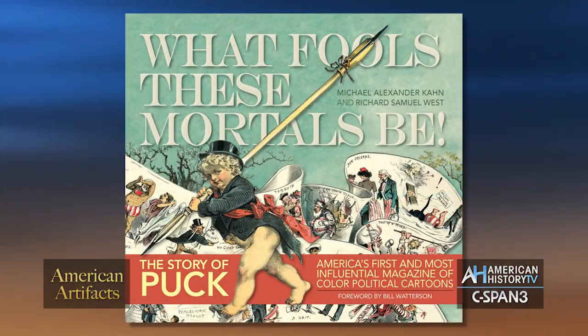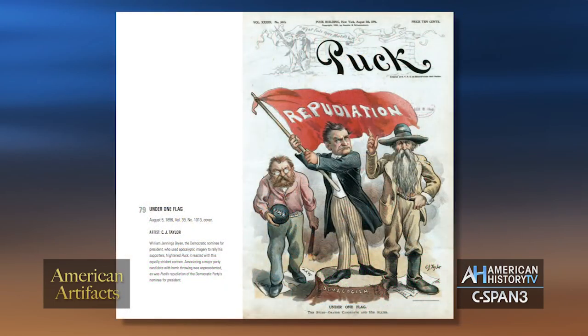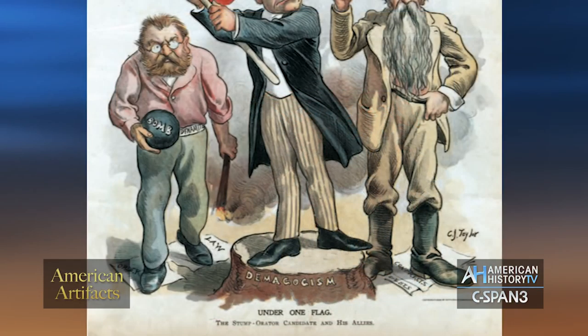You're watching American Artifacts on American History TV, and joining us in our studios is the co-author of the book 'What Fools These Mortals Be,' Michael Alexander Kahn. The book came out back in 2014. This is the first cartoon ever depicting a presidential candidate as a bomb thrower and an anarchist, suggesting that William Jennings Bryan was dangerous to the United States of America.